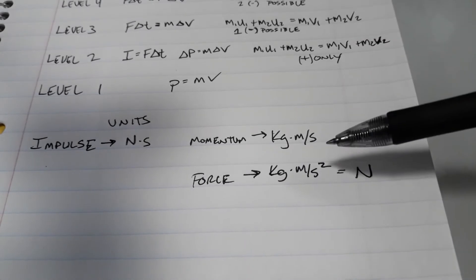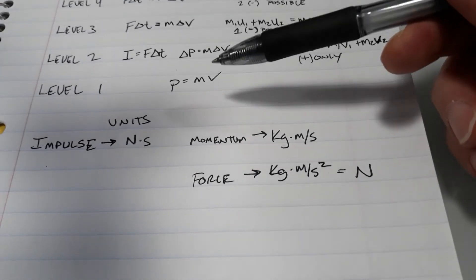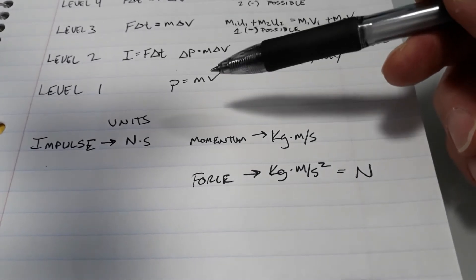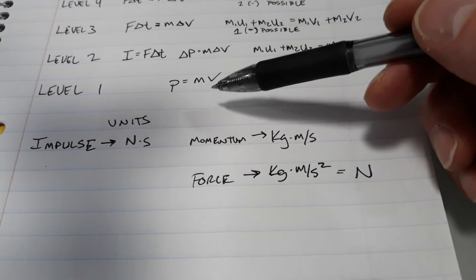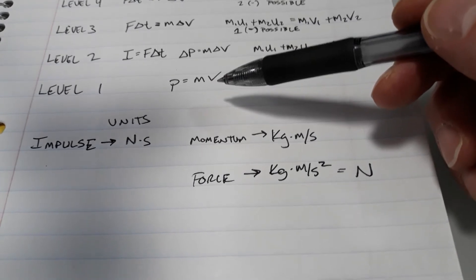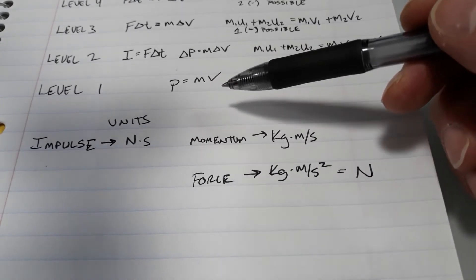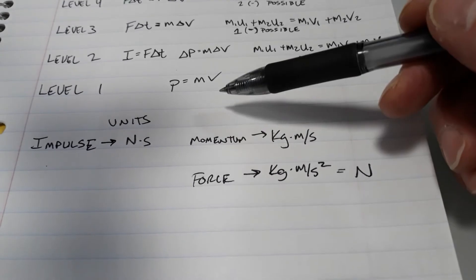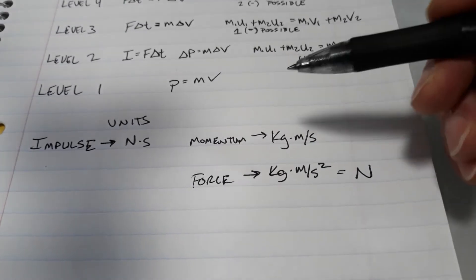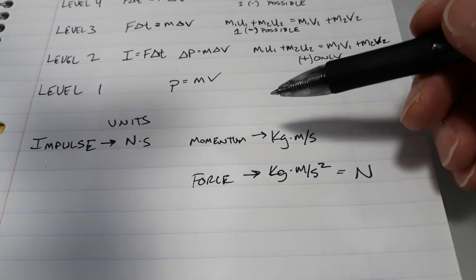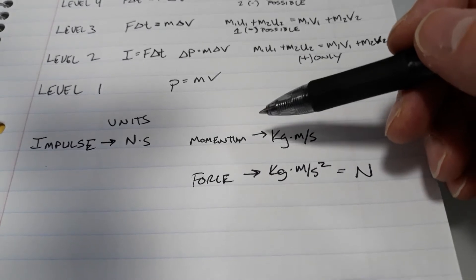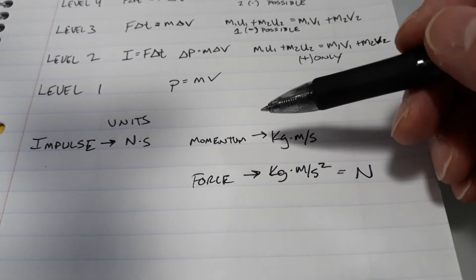So those units, you do have to be familiar with at level one. The formula is telling you that you can solve for three things: masses, velocities, or momentum. You should expect to do each. Look at the level one worksheet and make sure you try out different kinds of problems.